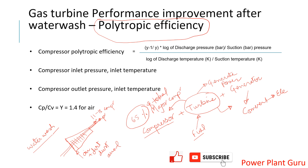To take care of blade fouling, a water wash activity is carried out using a detergent-based process. I will make a separate detailed video on water wash. The key idea here is to show the concept of efficiency calculation before and after water wash. By washing the compressor blades, you can compare polytropic efficiency before and after water wash to understand how effective the water wash activity was.